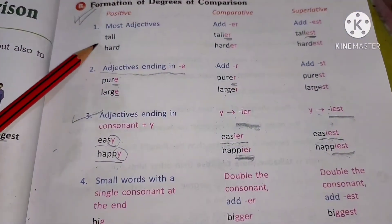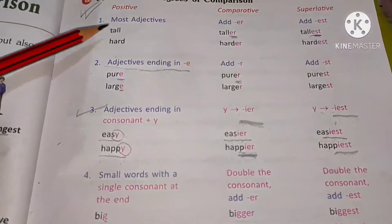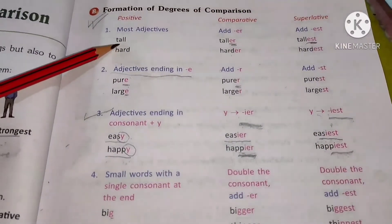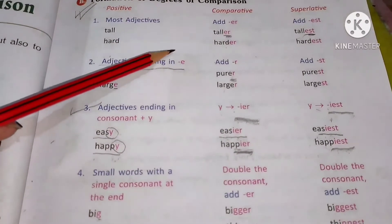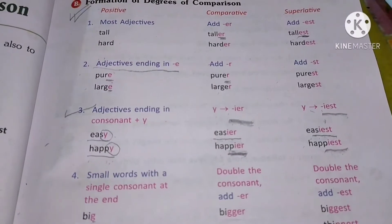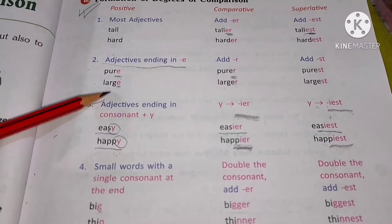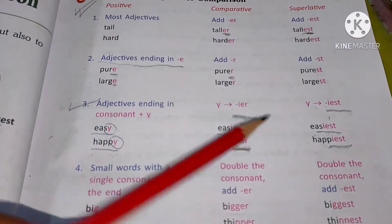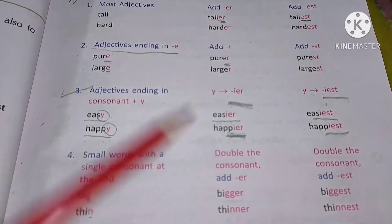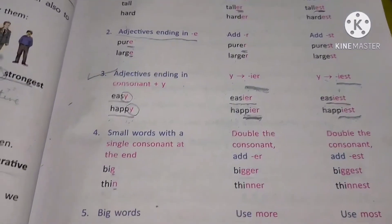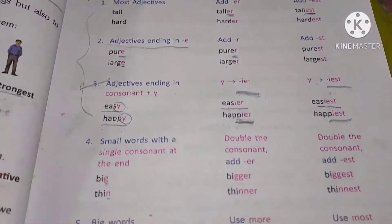Till now we have discussed point number one, point number two, and point number three. Three different kinds of rules were there. When we are talking about the first point, kuch aise adjectives jisme e-r aur e-s-t lagte hain, kuch aise adjectives jo e-mein end karre ho to unka kya rule hai, simply r add karna. Kuch aise adjectives jo y mein end karre ho to unka kya rule hota hai, woh different hota hai. So till now we have discussed all these three points. Now coming to fourth one.